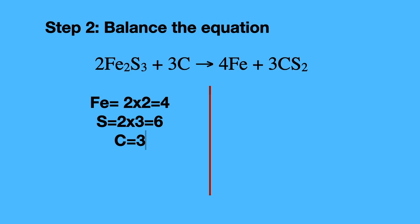On my reactant side I have iron equals 2 times 2 equals 4 followed by sulfur 2 times 3 equals 6 and carbon equals 3. On my product side or the right side I have iron equal to 4, sulfur equal to 6, and carbon equal to 3.